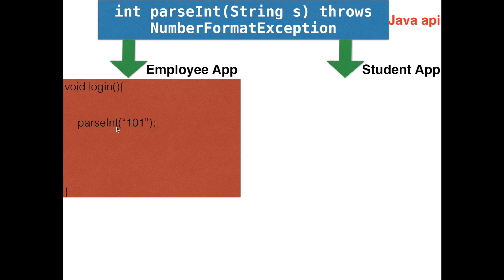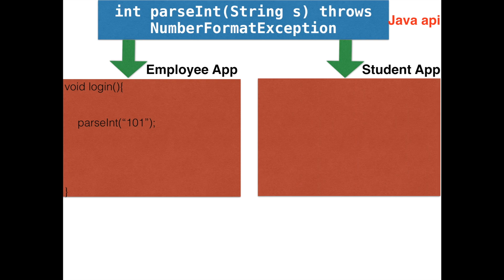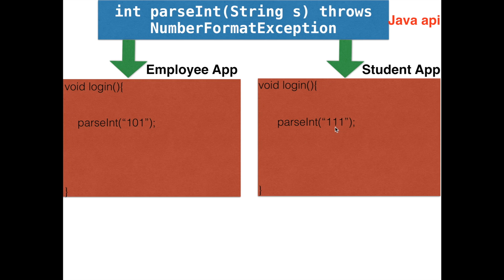Similarly, the second developer has a class for his Student App and also wants to create a login feature. He also wants to use parseInt inside his login method, passing '111' as a string — that would be his student ID. So both developers are using the common method parseInt inside their specific application methods.